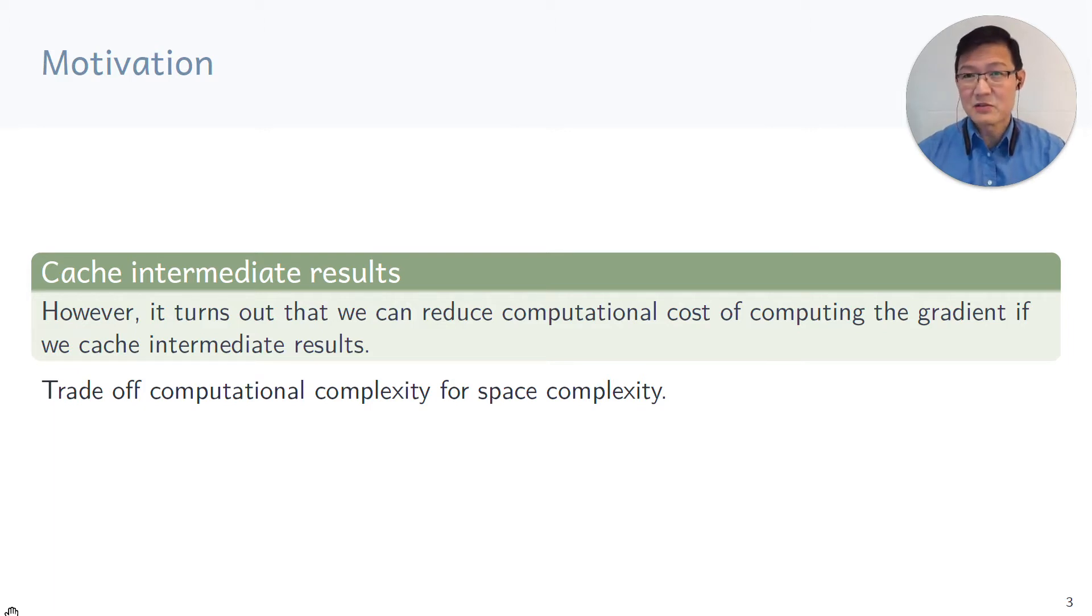The reason it's efficient is because we cache intermediate results. We can reduce computational cost of computing the gradient if we keep intermediate values. In some sense, it's unsurprising because we trade off computational complexity for space complexity.